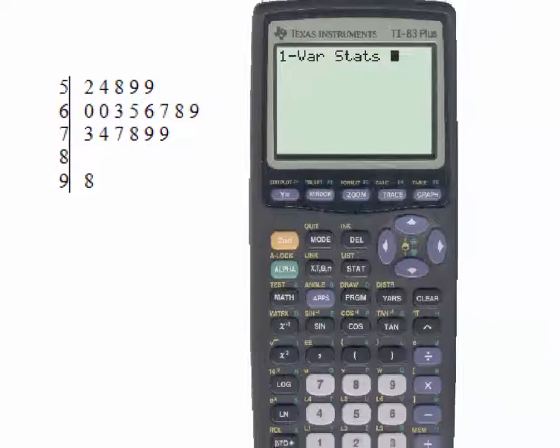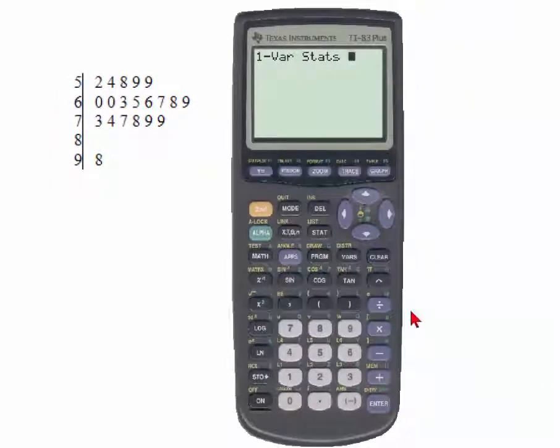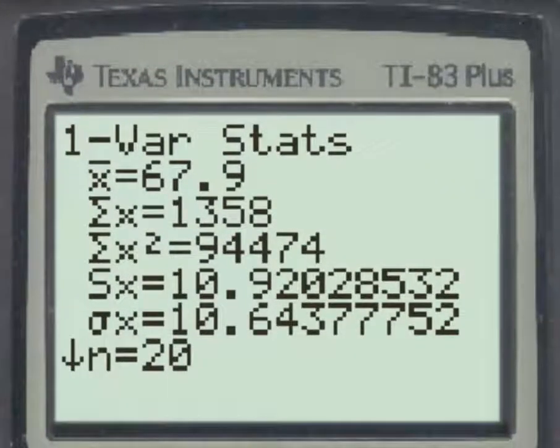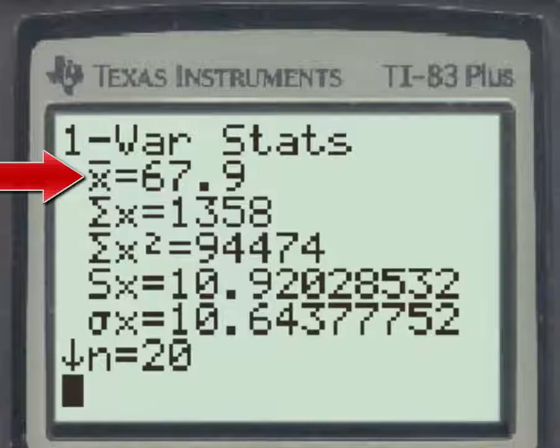Since our data is in list one, we'll use the yellow key and the number one to type L1, and when we hit enter, here we have the sample mean, which is given as x̄ of 67.9.